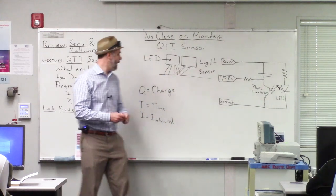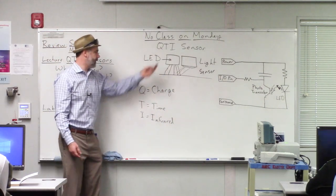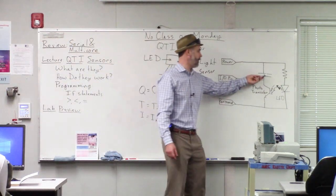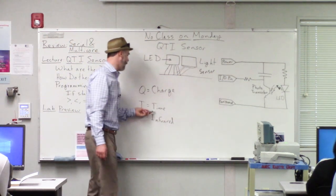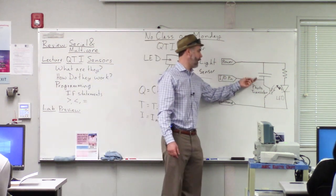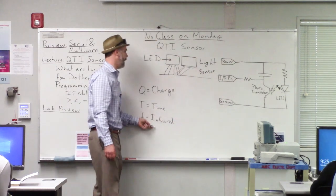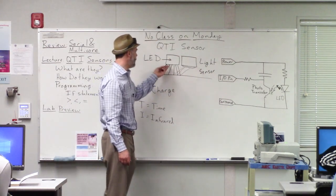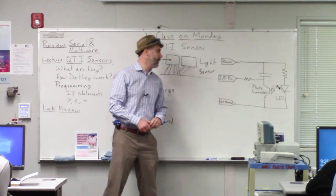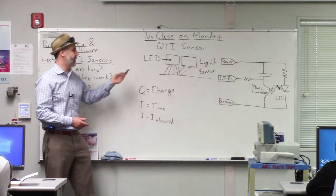So that's where the name comes from: Q is the charge that goes on the capacitor, T is the time it takes for the capacitor to drain, and infrared is the infrared light emitted by the LED and detected by the sensor. That's why this is called a QTI sensor and that's how it works.